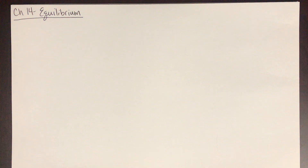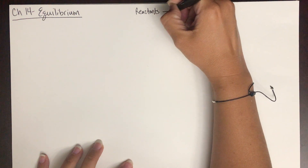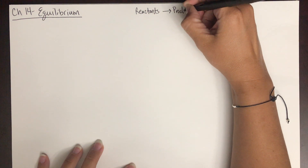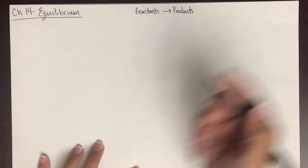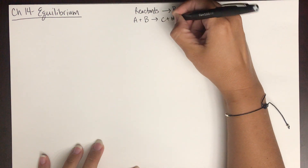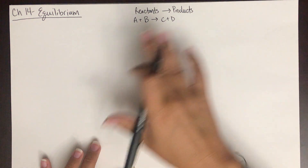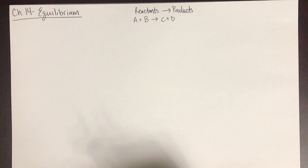We're going to talk about something called chemical equilibrium. So up until now, we have been looking at chemical reactions existing like this, where we have reactants on the left-hand side, an arrow, and then products on the right-hand side. Sometimes we represent this as A plus B gives us C plus D — reactants and then products. This is not really the whole picture of what's happening in a chemical reaction, because most chemical reactions are actually reversible.